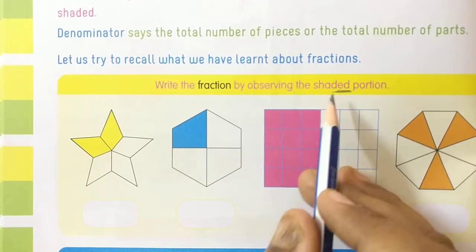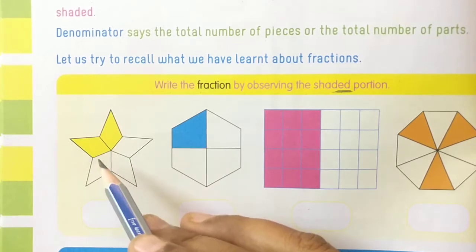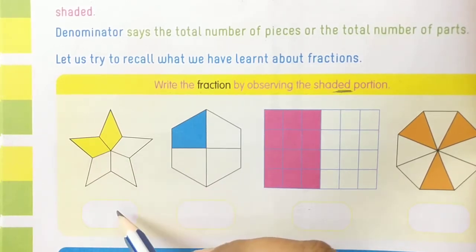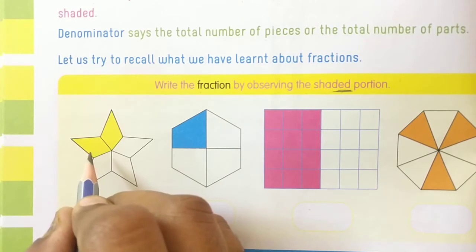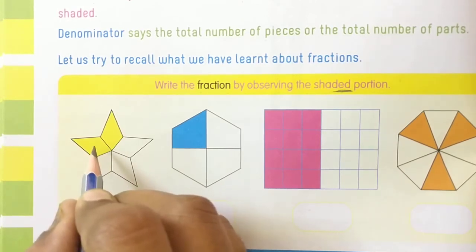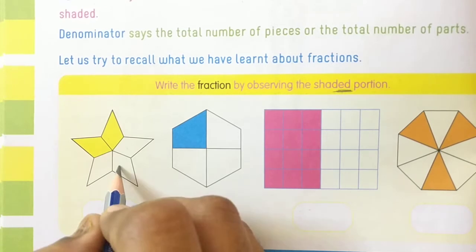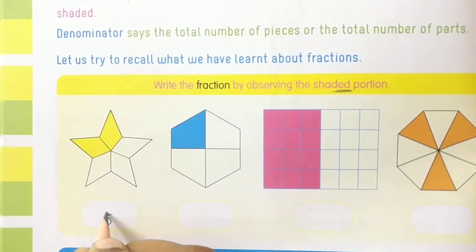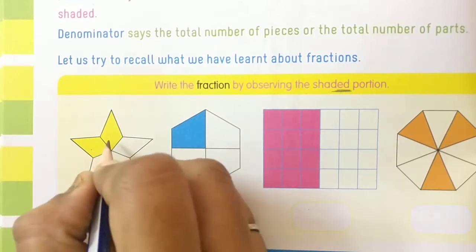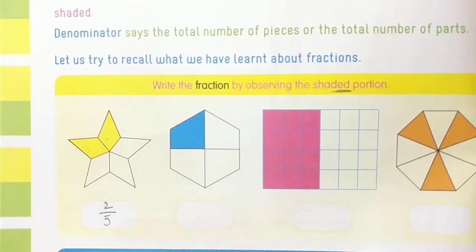See the first figure. How many parts do you have? One, two, three, four, five — so we are having total five parts. How many are shaded? One, two — two are shaded. So the answer is two by five.